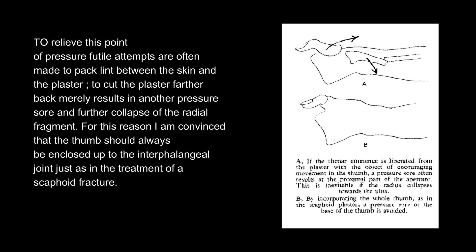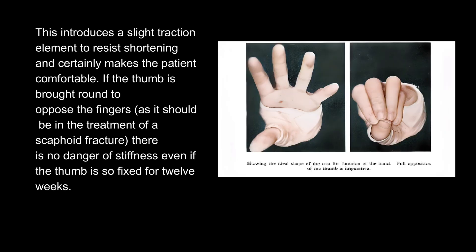For this reason, I am convinced that the thumb should always be enclosed up to the interphalangeal joint, just as in the treatment of a scaphoid fracture. This introduces a slight traction element to resist shortening and certainly makes the patient comfortable. If the thumb is brought round to oppose the fingers, as it should be in the treatment of a scaphoid fracture, there is no danger of stiffness, even if the thumb is so fixed for 12 weeks.